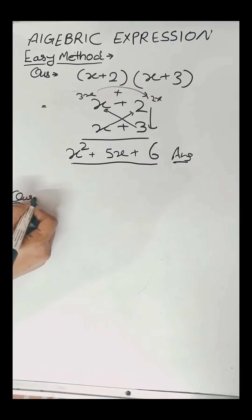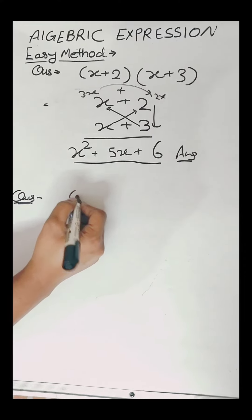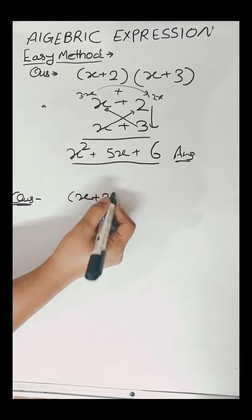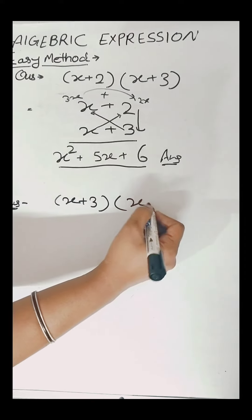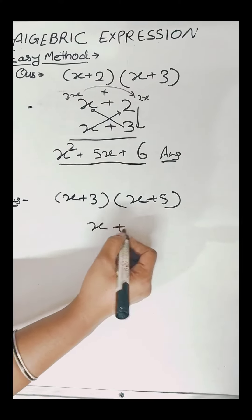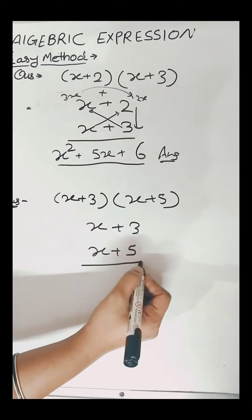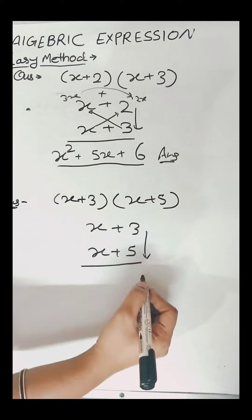So the next question is (x+3) in bracket multiply by (x+5) in bracket. Again we will write x+3 and below it x+5.